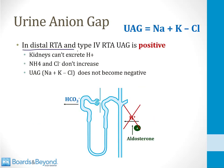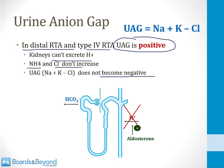In a distal RTA or in a type 4 RTA, the urine anion gap is positive, and that's why this test can be helpful for working on your differential diagnosis. The reason it's positive is because the kidneys can't excrete protons normally, therefore ammonium doesn't go up normally and chloride doesn't go up normally. A positive urine anion gap in the setting of an acidosis is abnormal — when you see that, it means there's something wrong with the secretion of protons and ammonium in the distal nephron.